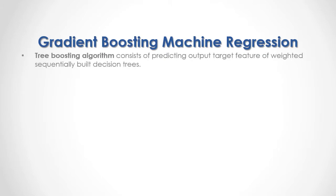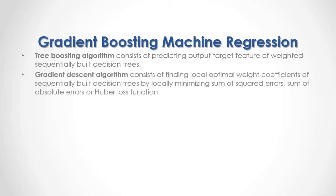Tree Boosting algorithm consists of predicting the output target feature of weighted sequentially built decision trees. The Gradient Descent algorithm consists of finding local optimal weight coefficients of sequentially built decision trees by locally minimizing sum of square errors, sum of absolute errors, or the Huber loss function.